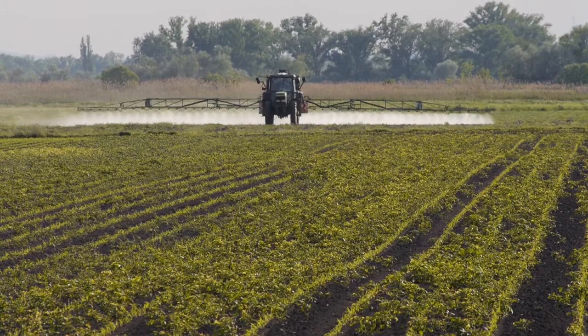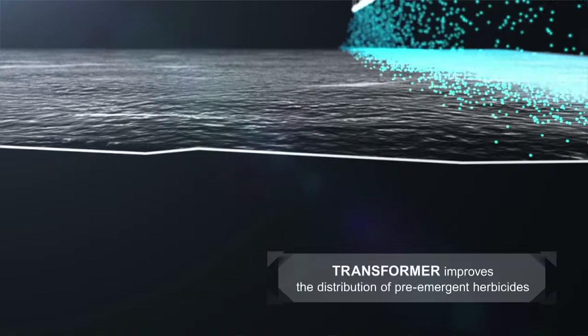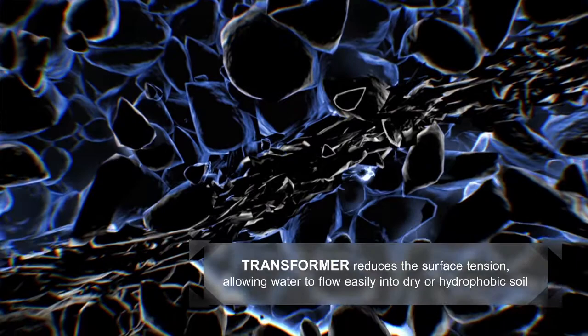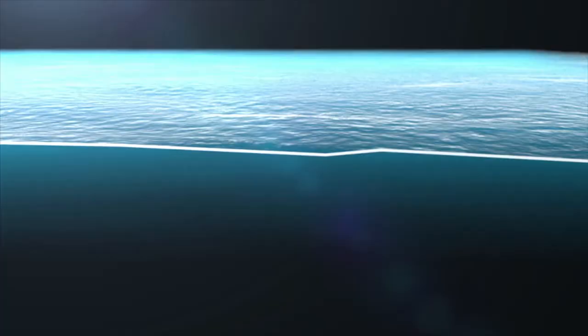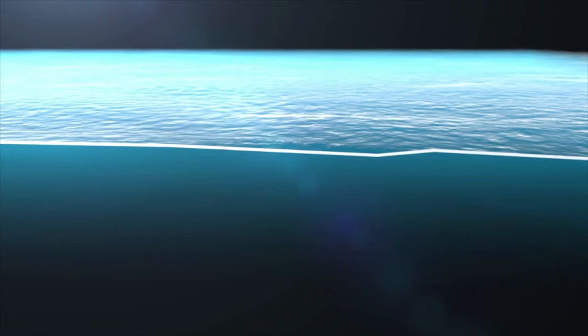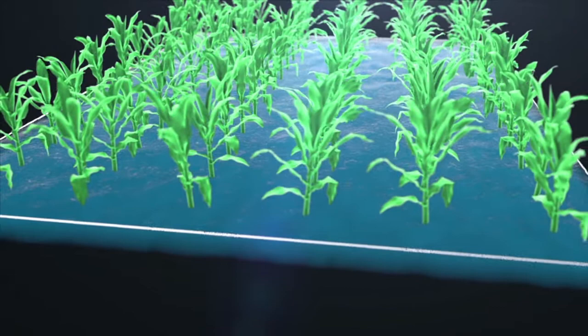Transformer has been shown in research trials to improve the effectiveness of pre-emergent herbicide applications. After soil conditions have been improved, herbicide spray solution flows easily into dry or hydrophobic soils. The improved movement of water enables a uniform unbroken protective blanket of herbicide to form in the top layer of the Transformer-treated soil, minimizing untreated areas.